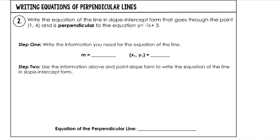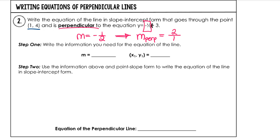For example 2, we're going to write an equation of a perpendicular line. Write the equation of the line in slope-intercept form that goes through the point (1, 4) and is perpendicular to y equals negative 1 half x plus 3. The slope of our given line is negative 1 half, but that's not the slope of the line we're creating. Perpendicular slopes are opposite reciprocals, so our first slope is negative, meaning our perpendicular slope will be positive. Our first slope is 1 over 2, so the perpendicular slope will be 2 over 1, which simplifies to 2.